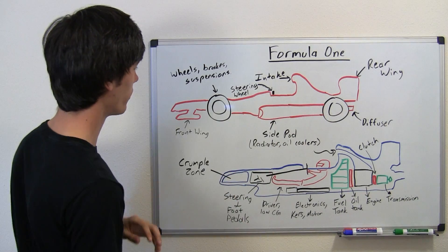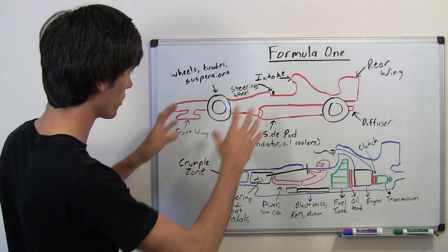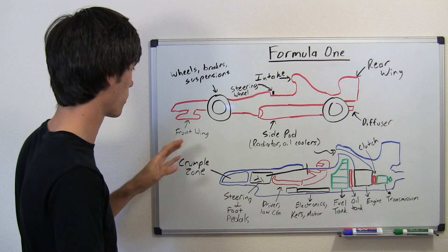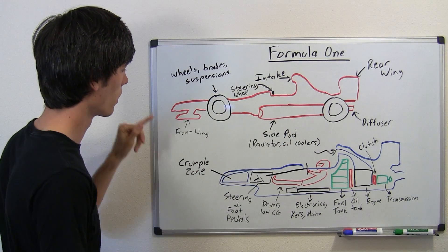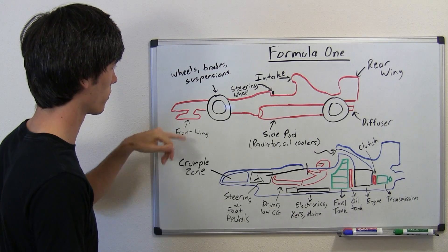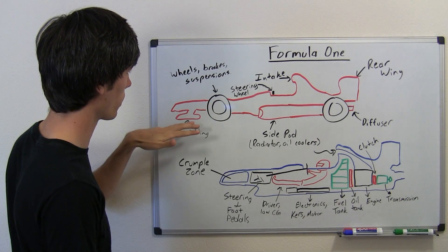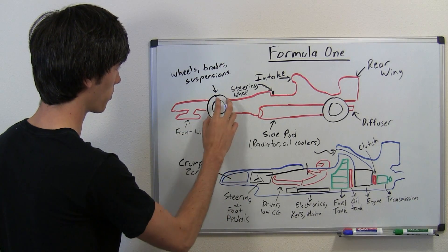So anyways, here we have the outside of a fabulous Formula One car. You can see that's pretty much perfectly drawn, proportional and all. Anyway, so we'll just start at the front and work our way back. So we've got the front wing here, responsible for a good portion of the downforce. You've got the wheels, the brakes, the suspension,